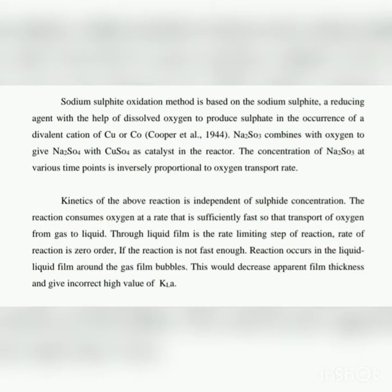The sodium sulfate oxidation method is based on sodium sulfite (Na2SO3), a reducing agent, reacting with dissolved oxygen in the presence of a divalent cation of copper or cobalt as catalyst. Na2SO3 combines with oxygen to give Na2SO4 (sodium sulfate), with CuSO4 as catalyst in the reactor. The concentration of Na2SO3 at various time points is inversely proportional to the oxygen transport rate.